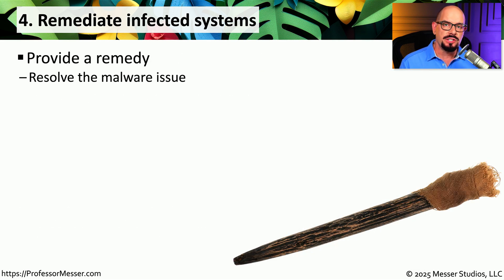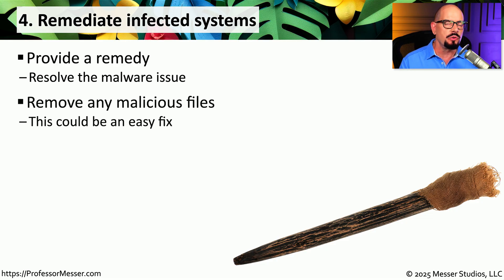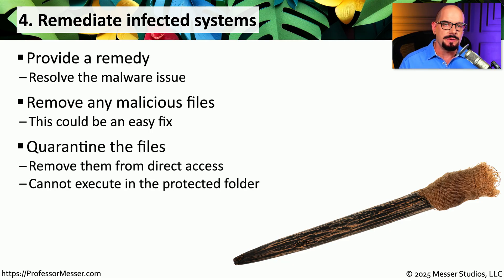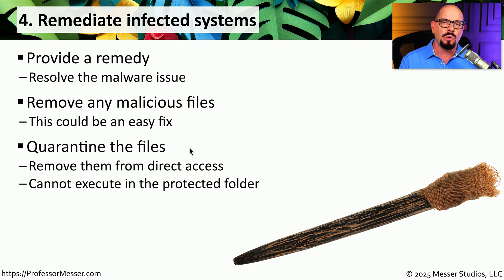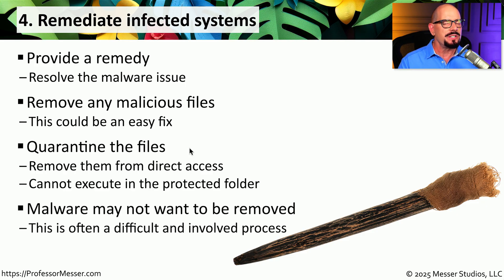Now we need to fix the malware issue. One thing we can do is remove any files clearly identified as malicious. Some malware can be identified by an anti-malware scanner — you click a button to remove those files and the malware is removed. If the malware was identified in a real-time scan, those files were probably already deleted and moved to a quarantine location, keeping them available for administrator research but inaccessible to users. However, malware removal is very often not as simple as deleting a single file, as malware frequently embeds itself within many different points inside the operating system, making it extremely difficult to completely remove.